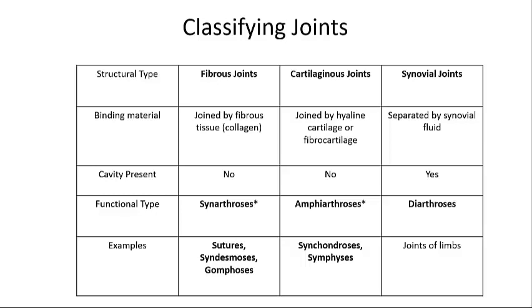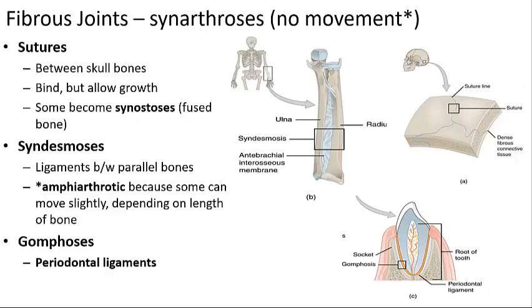There are also sub-classifications of each joint type. Fibrous joints can be sub-classified as sutures, syndesmoses, or gomphoses. Cartilaginous joints can be sub-classified as synchondrosis or symphyses. Synovial joints have special features we'll discuss in more detail.